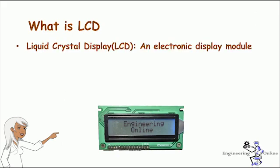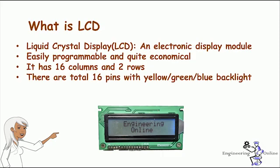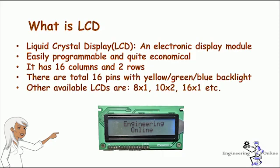LCD screen, or liquid crystal display, is an electronic display module used in a wide range of applications. A 16 by 2 LCD display is quite a basic module and is most commonly used in various devices and circuits. LCD is preferred over seven segments and other multi-segment LEDs because it is economical and easily programmable, with no limitation on displaying special or even custom characters, animations, etc.